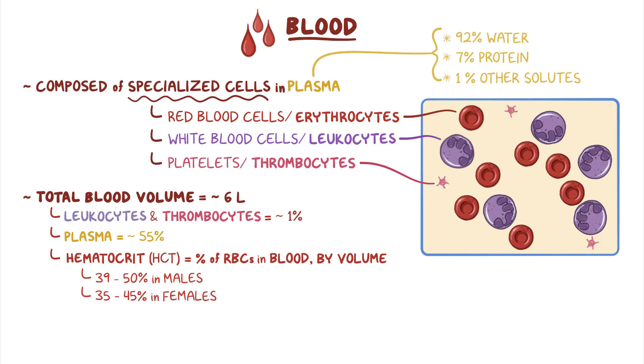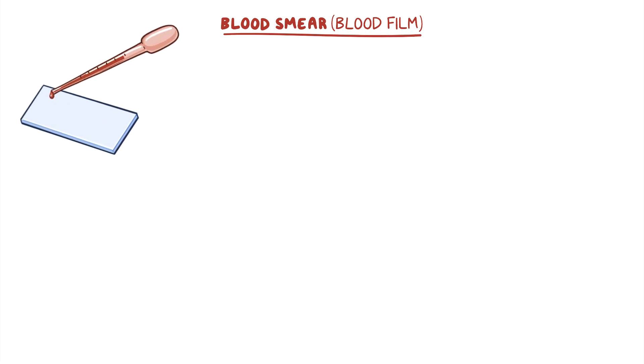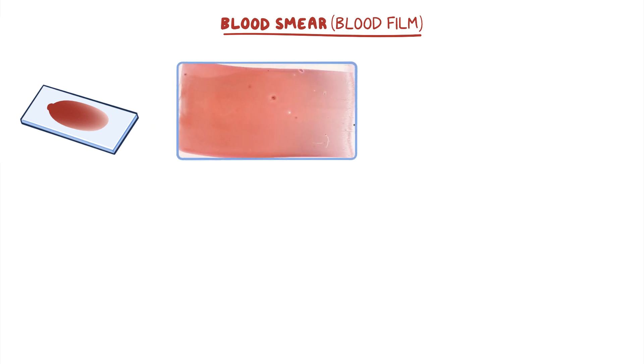The morphology and characteristics of blood cells can be analyzed histologically by using a common technique called a blood smear, or blood film. A drop of blood is placed on a glass slide, then it's literally smeared or spread across the slide from left to right, creating a thin layer of cells similar to this image of a blood smear stained with Wright stain.